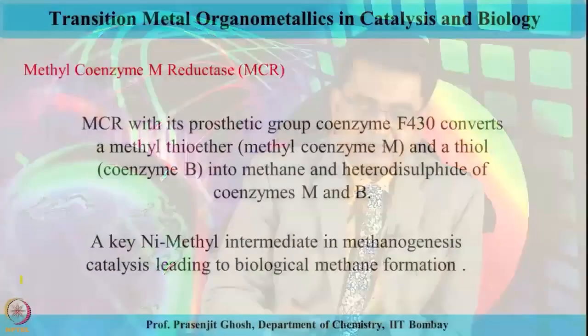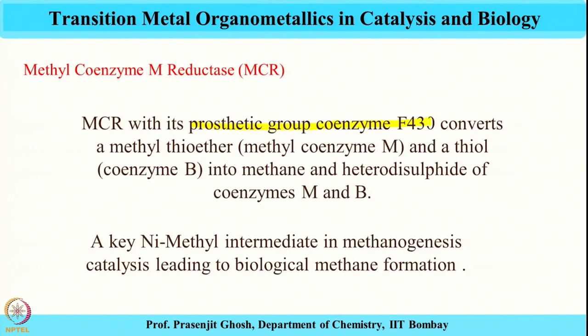Proceeding further, we are going to talk about another interesting enzyme called methyl coenzyme M reductase, popularly known as MCR. MCR functions via an intermediate supposedly formed by the formation of a nickel-methyl bond — that is the organometallic connection. MCR has a prosthetic group, a coenzyme. The function of MCR is that it converts methyl thioether, which is coenzyme M, and a thiol. The reactants are thioether and thiol, and the product is methane and a hetero disulfide of coenzymes A and B. A key intermediate containing a nickel-methyl bond is supposed to form in the methanogenesis or methane production by this enzyme.